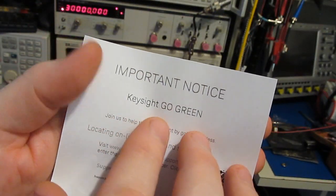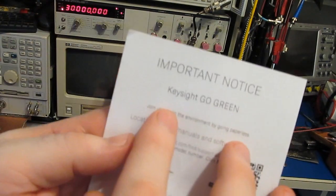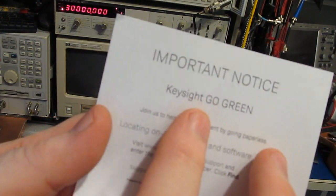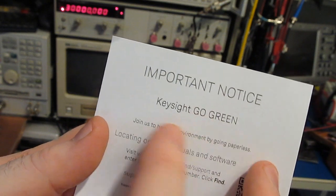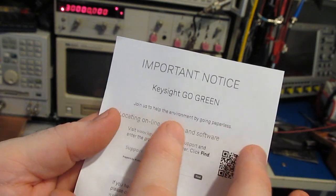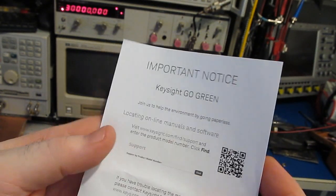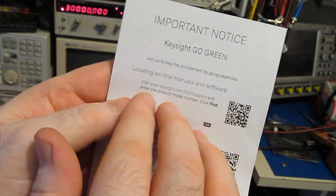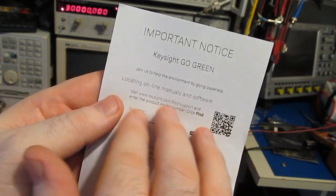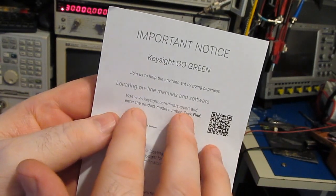I didn't show this earlier, but this meter was supplied with this notice. You can see Keysight "go green." I would have thought they'd say "goes green." Join us to help the environment by going paperless. So while the packing slip of the meter suggested supplied with the manuals, it's not actually the case. You have to download it from their website.